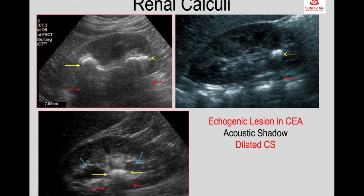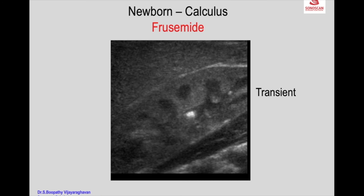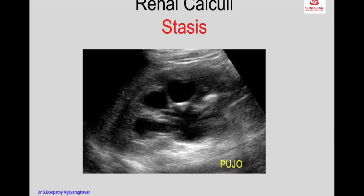There may be a dilated collecting system due to obstruction. The acoustic shadow depends on the size of the calculus and the type of calculus. Some calculi, like phosphate, may not attenuate ultrasound. It can be a renal pelvic calculus obstructing all the calices, resulting in dilatation of all the calices. With withdrawal of furosemide, they disappear.